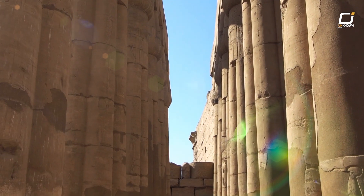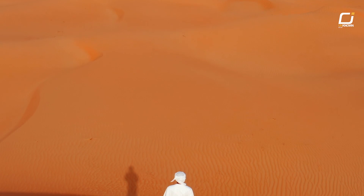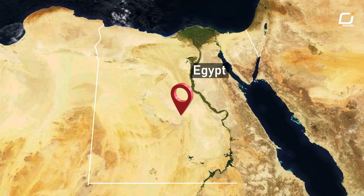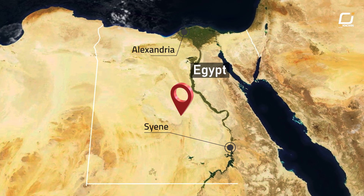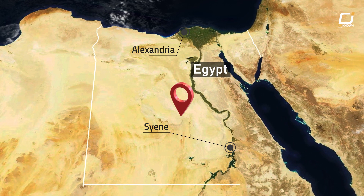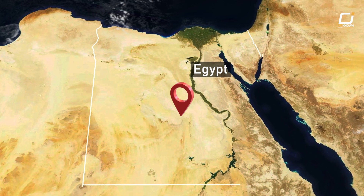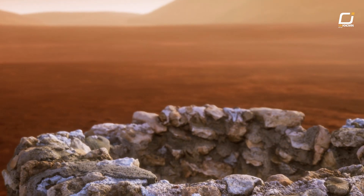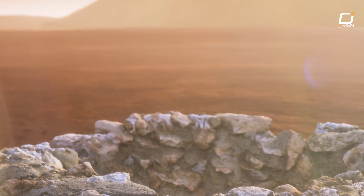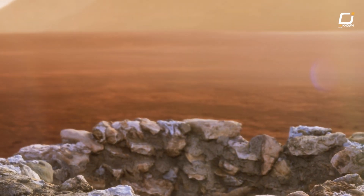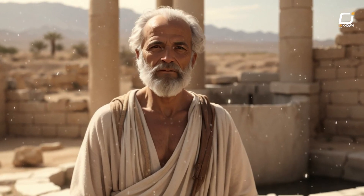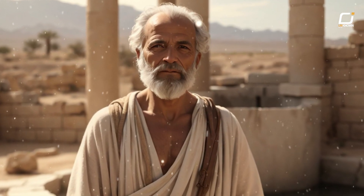During his time in Alexandria, Eratosthenes heard reports that on the summer solstice in the southern Egyptian city of Syene, the sun would shine directly down a deep well, lighting the water all the way to the bottom with no shadows cast on the sides. He decided to investigate this phenomenon further.